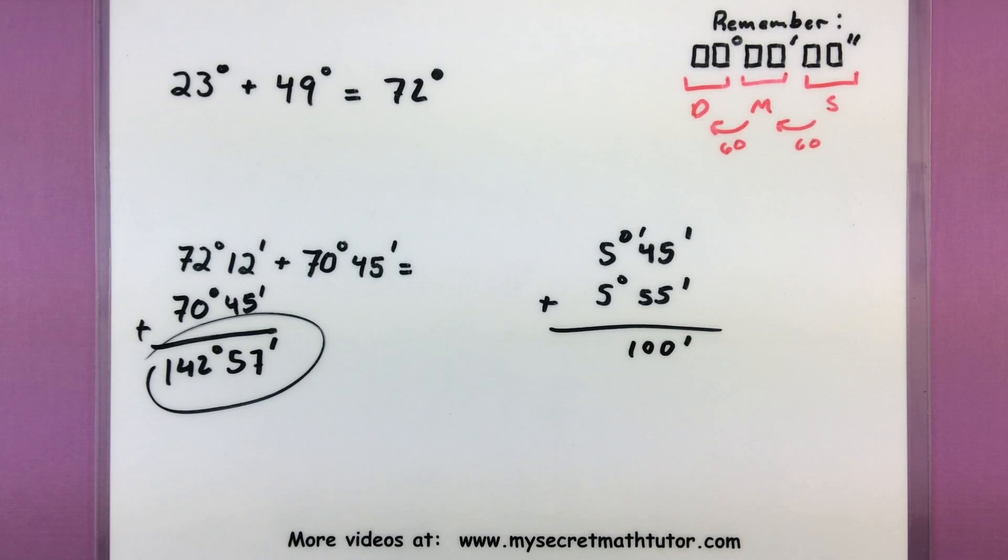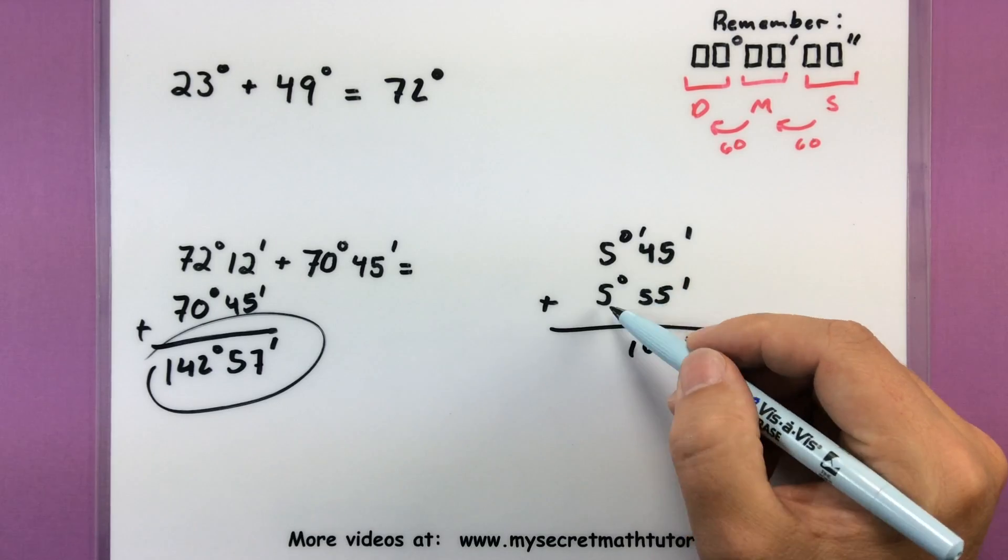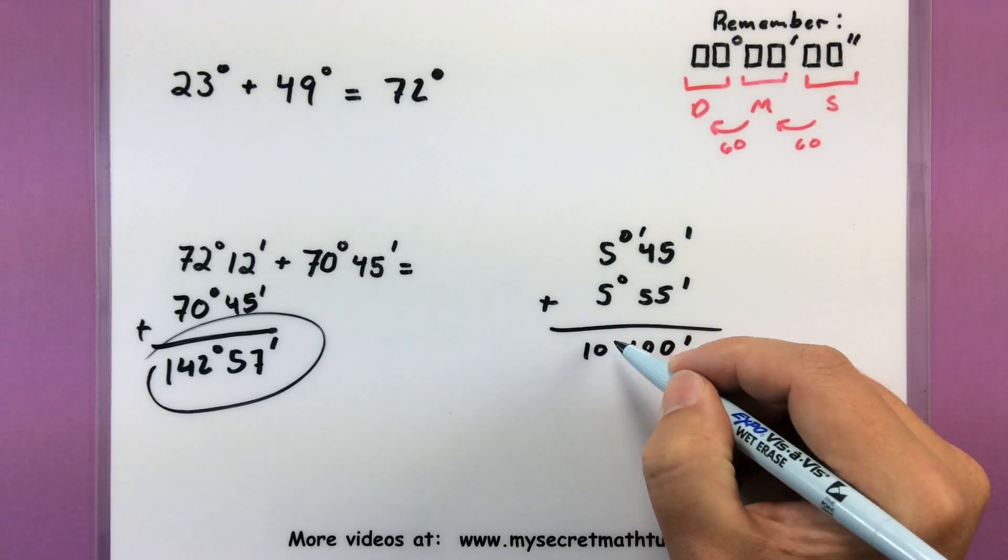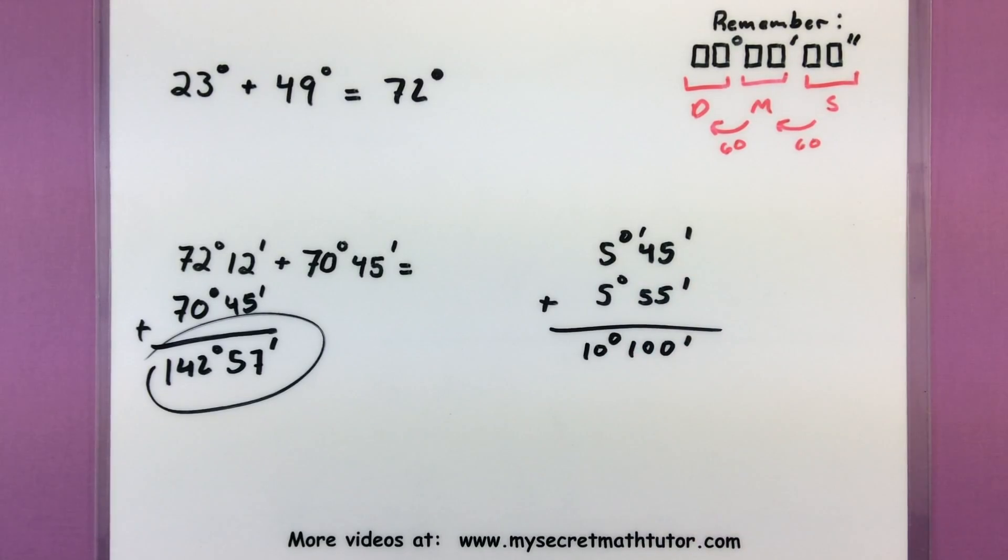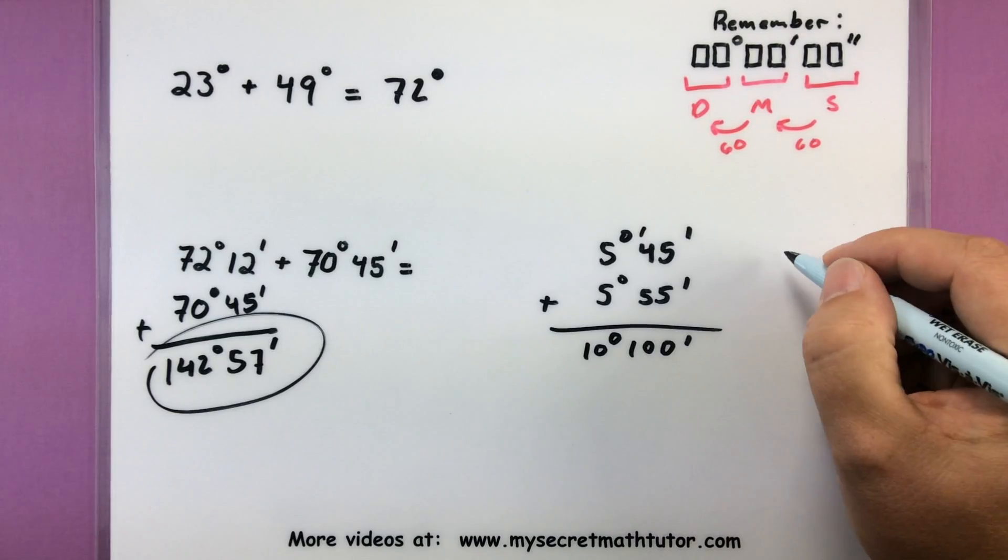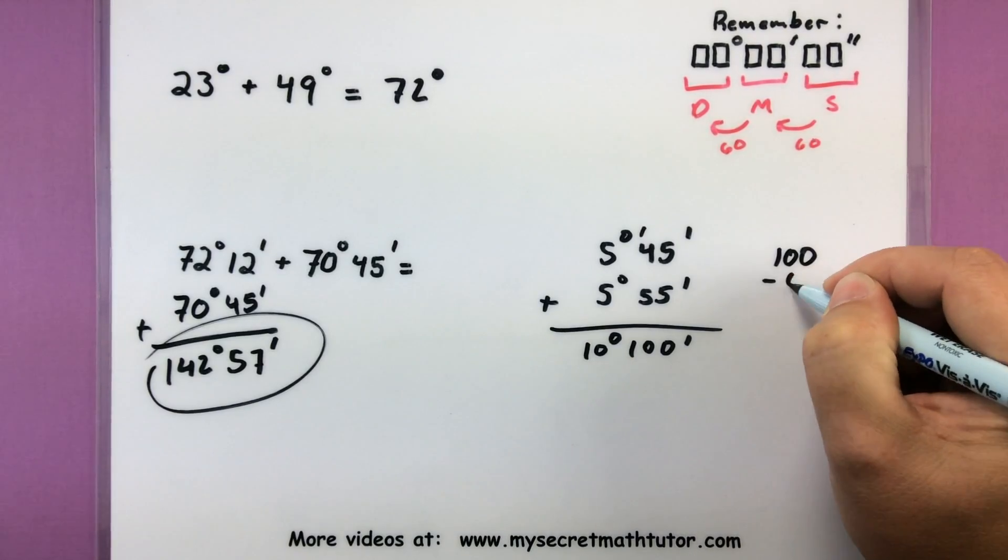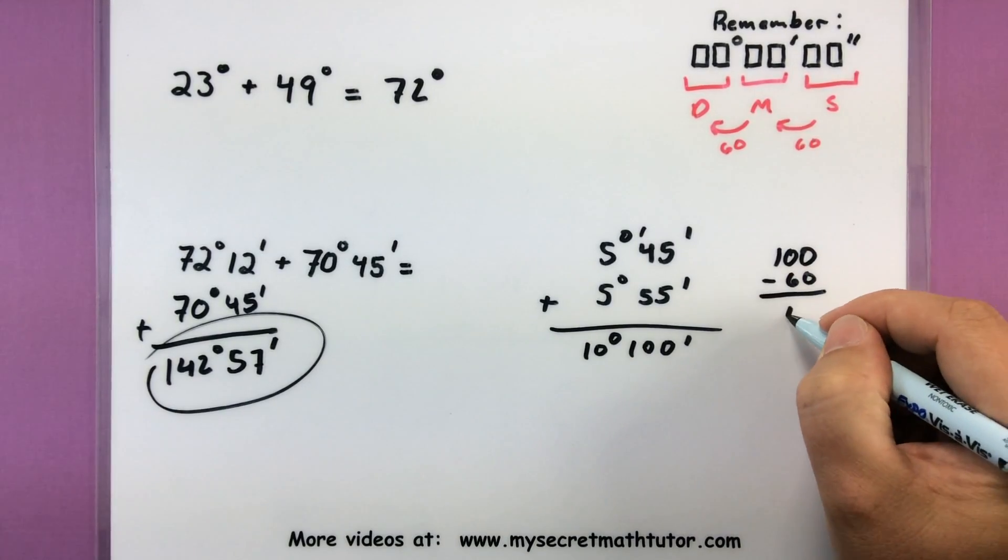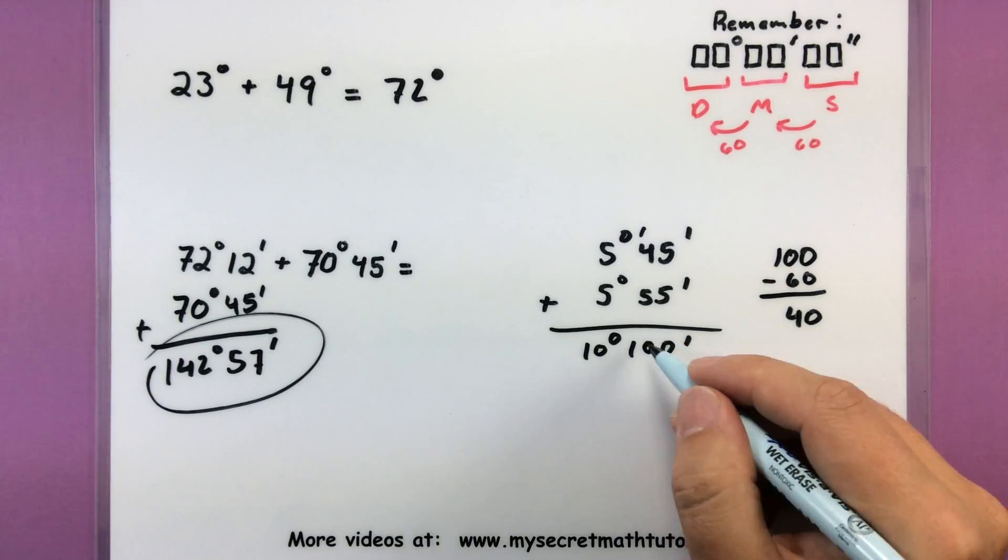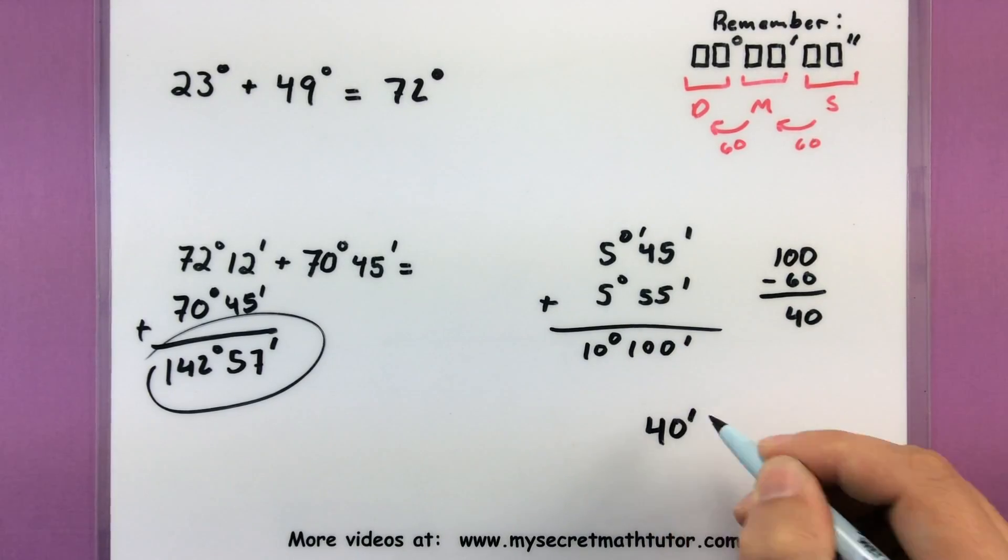We only want that number to be between zero and 60, so that's a little bit too big. Now I'm going to leave that there for a bit and just move on. So 5 degrees, 5 degrees, 10 degrees. Since I have a number that's a little bit too large there, I need to take away a group of 60. So I'm going to take 100, take away that group, and now I have 40 left. So this 100 is going to turn into 40 minutes.